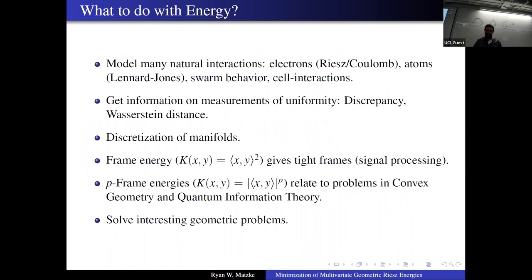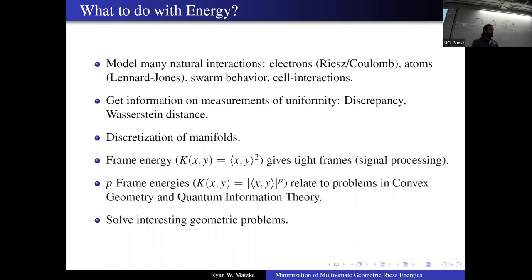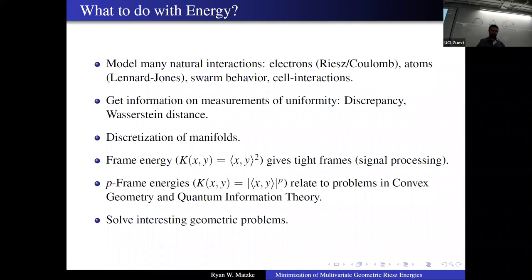It's worth talking about some things that maybe haven't been mentioned that can come out of working with energy. You can certainly model a lot of natural phenomena: interactions of electrons is just the Coulomb energy, and interactions between atoms involves things like the Lennard-Jones potential. It can also be used to model more biological things, like swarm behavior — where the repulsive-attractive dynamics and the clumping it leads to can actually be a good way to describe social behavior between humans or animals. There's been a fair bit of work showing that some of this modeling has been pretty useful for dynamic purposes.